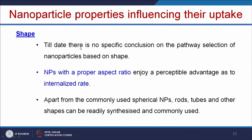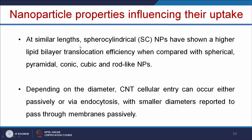Regarding shape, there is currently no specific conclusion on pathway selection based on nanoparticle shape. Some reports show that rod-shaped particles have more cellular entry compared to spherical shapes, but research is still ongoing. At similar lengths, sphero-cylindrical nanoparticles have shown higher lipid bilayer transduction efficiency compared to spherical, pyramidal, or conical nanoparticles. Depending on the diameter of carbon nanotubes, cellular entry can occur either passively or by endocytosis, with smaller diameters reported to pass through membranes passively.